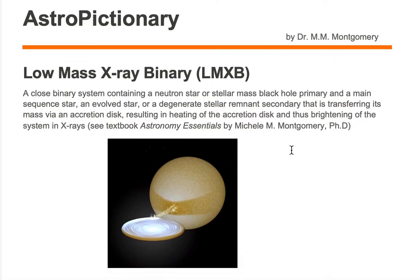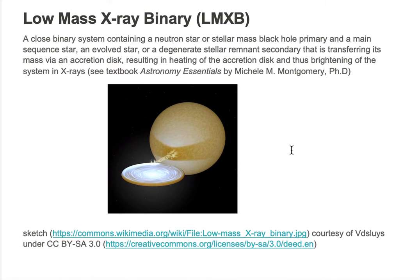Let's unpack this definition for a low-mass x-ray binary. The first thing is we have two objects. The first one is a primary, and that primary can either be a neutron star or a stellar mass black hole. The primary is located in the center of the accretion disk. You can't see the primary because the accretion disk is surrounding it.